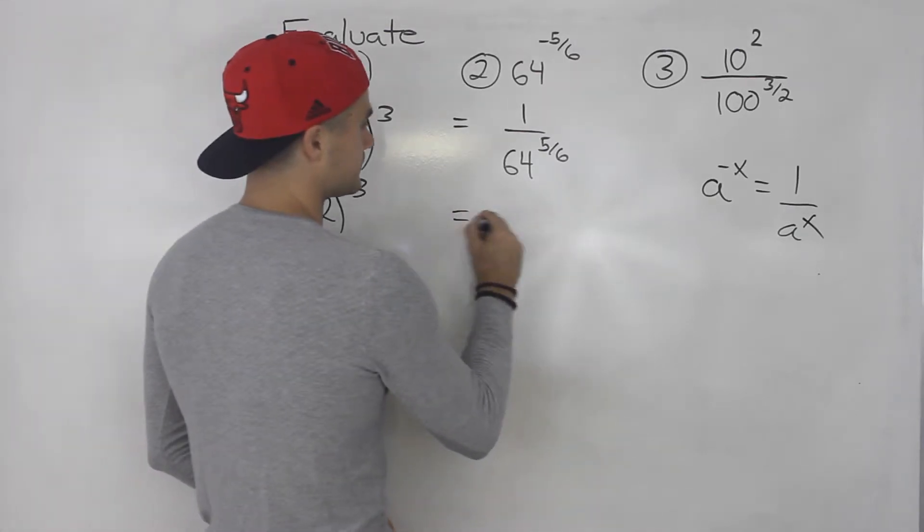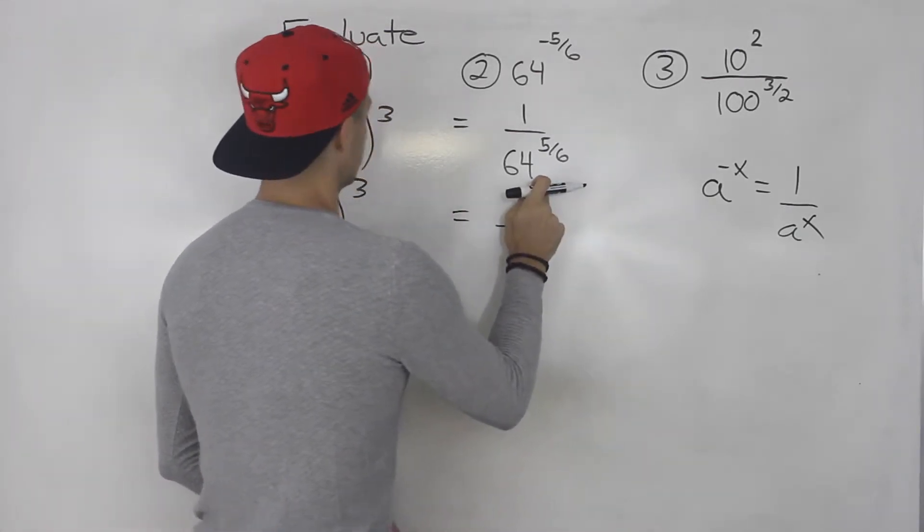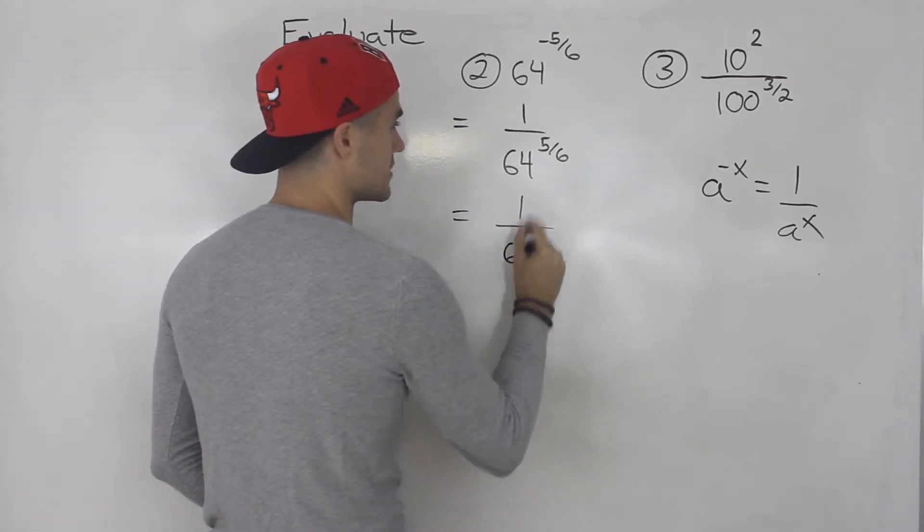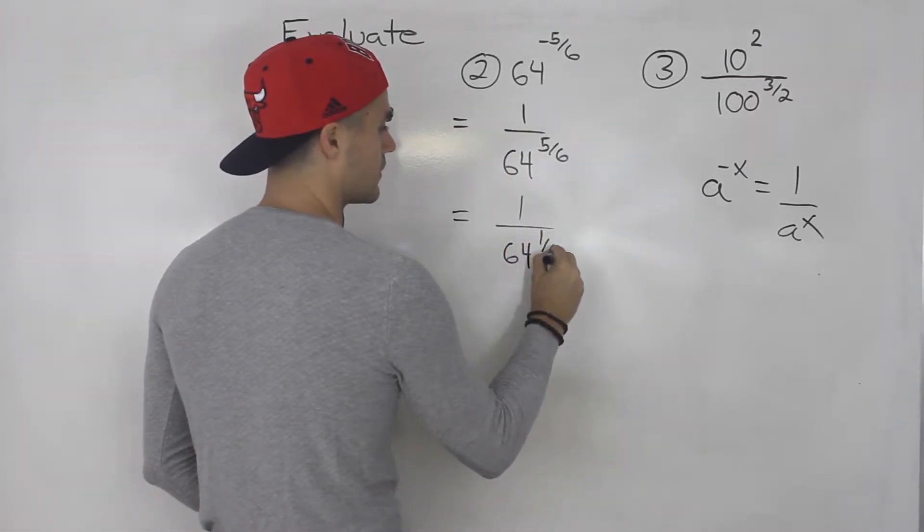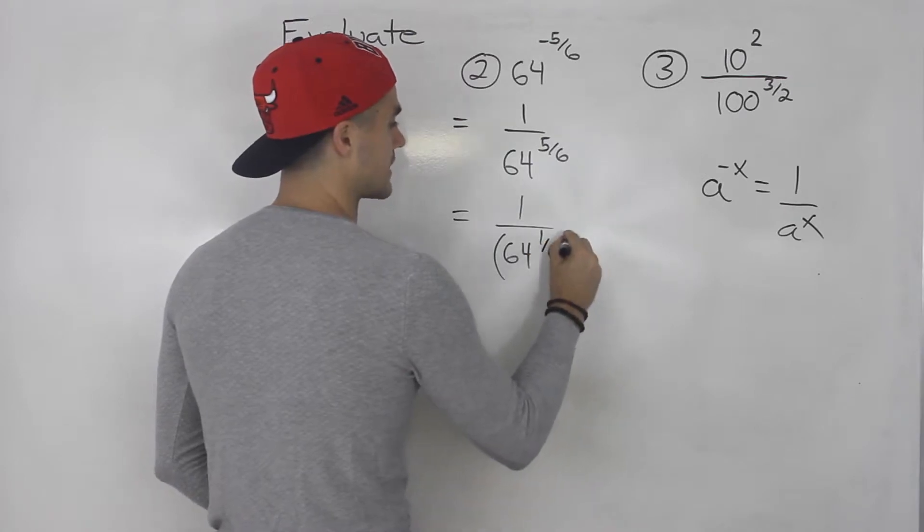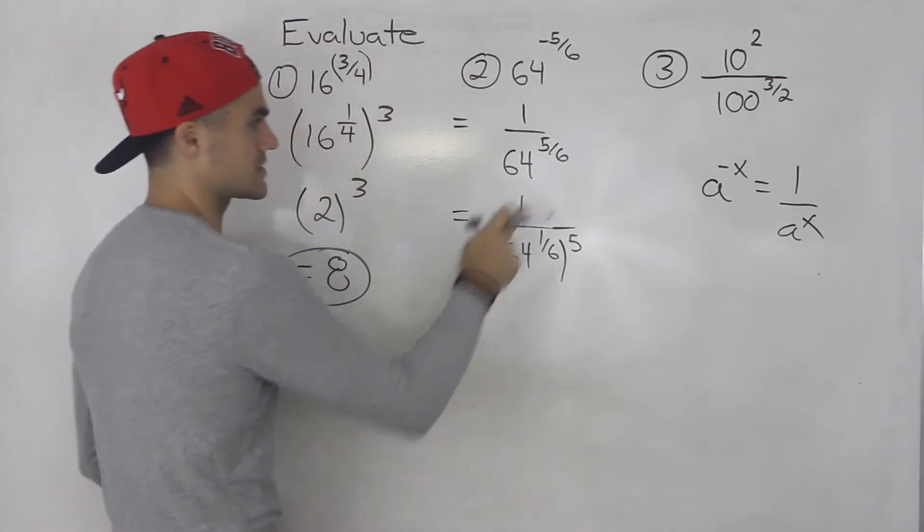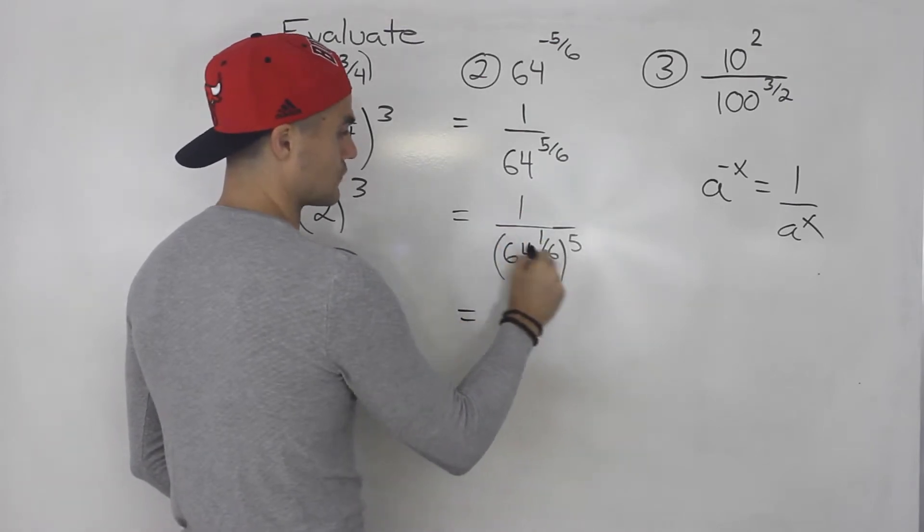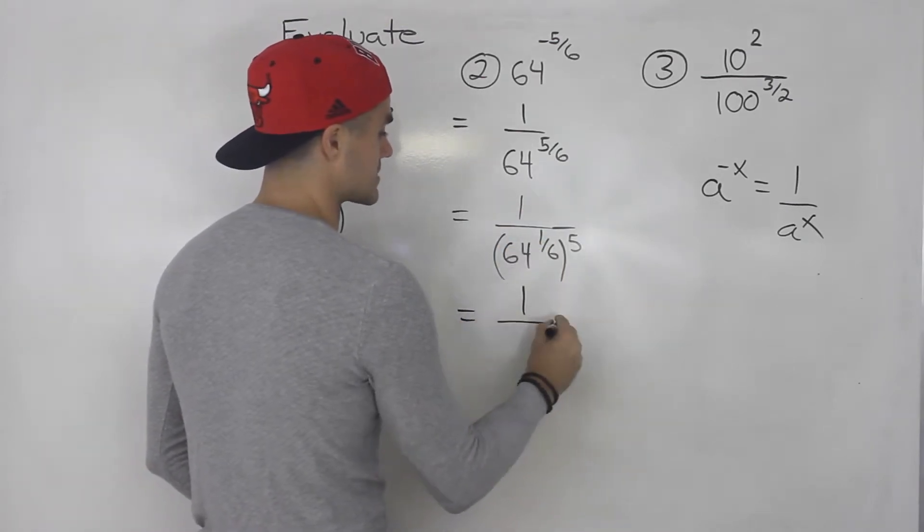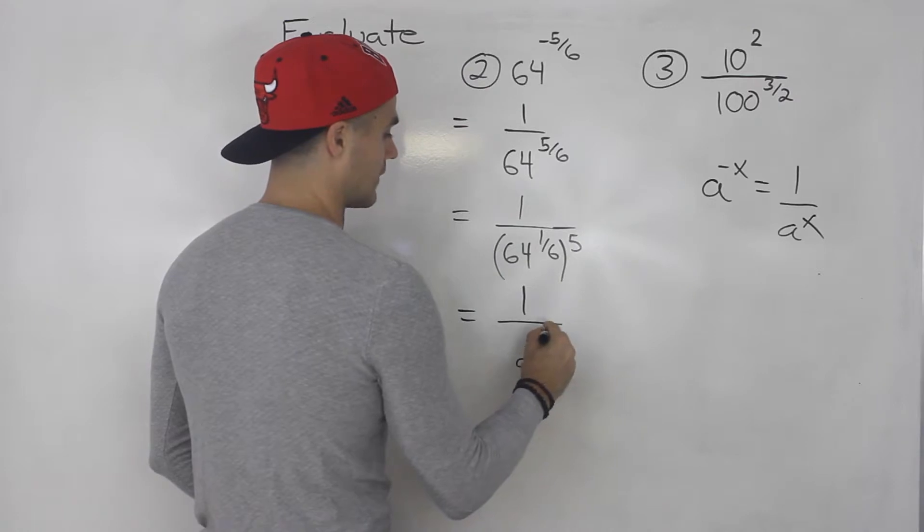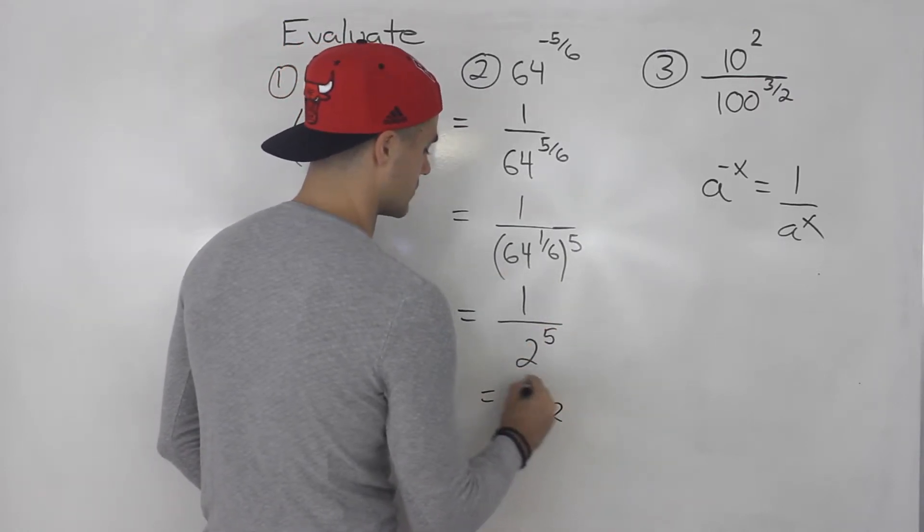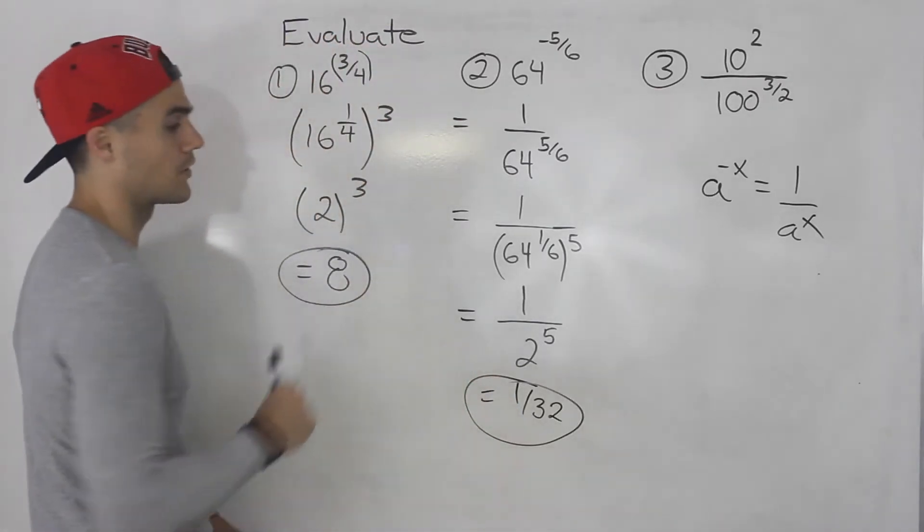From here to evaluate this, I just use this method. So I take 64 to the power of 1 over 6, then take that to the power of 5. So I split up that rational exponent. 64 to the power of 1 over 6 is 2, and then 2 to the power of 5 gives us 1 over 32. That's the answer to number 2.